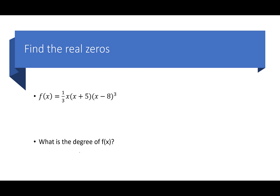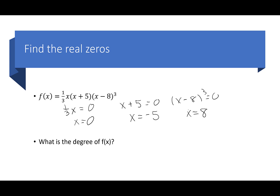Let's do one more. I have f(x) = (1/3)x · (x + 5) · (x − 8)³. Setting each factor equal to 0: (1/3)x = 0 gives x = 0; x + 5 = 0 gives x = −5; dropping the exponent of 3, x − 8 = 0 gives x = 8. So three zeros: 0, −5, and 8. For the degree, I add the exponents: 1 + 1 + 3 = 5, so my degree is 5.